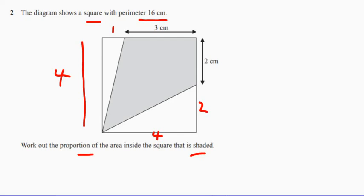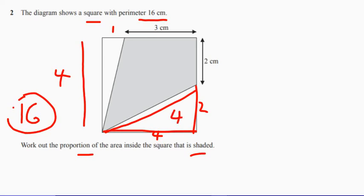The whole square is 16 centimeters squared. So let's think about the unshaded part. If I think about this triangle just here, half the base times the height, four times two, half. So that's going to be four.